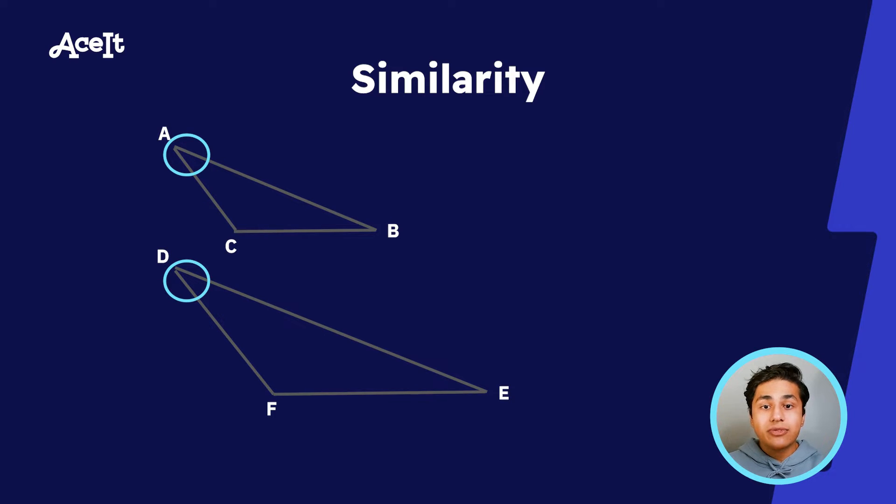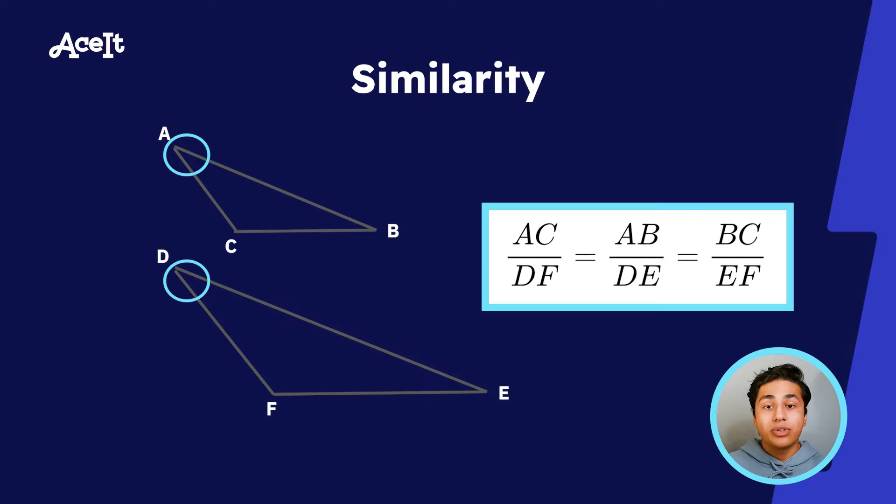Their side lengths have ratios such that their corresponding sides are equal to one another, which means that AC over DF is equal to AB over DE, which is equal to BC over EF.